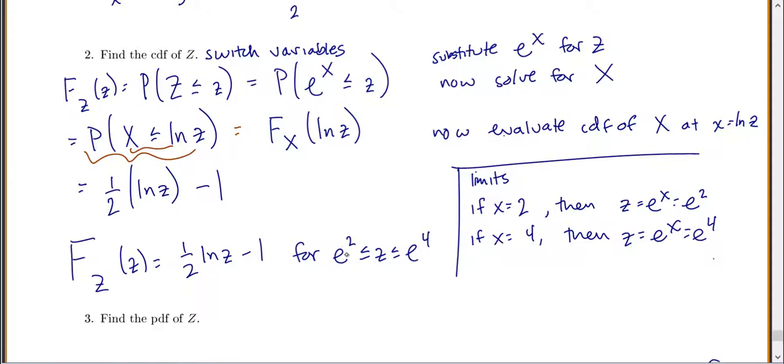It might be nice to approximate this. e to the 2 is about 7.4, and e to the 4 is about 54.6, just because otherwise I have no reference for what those numbers would be.